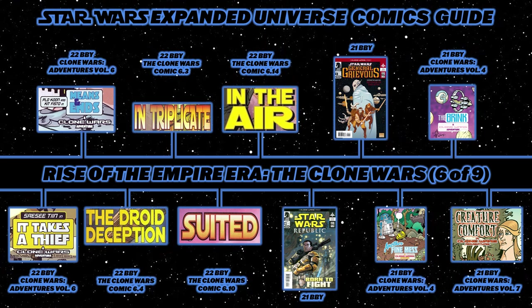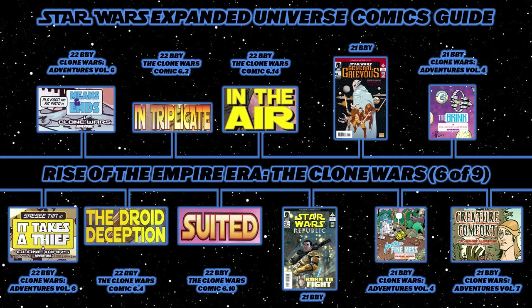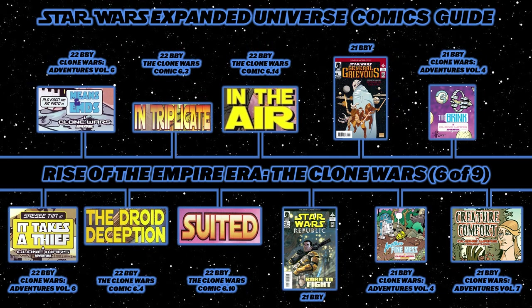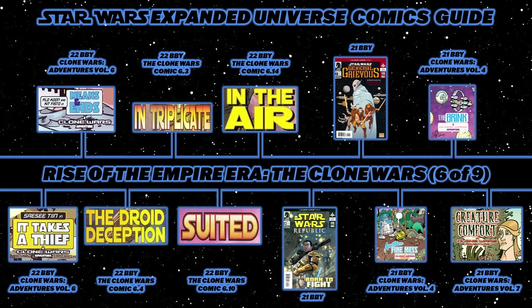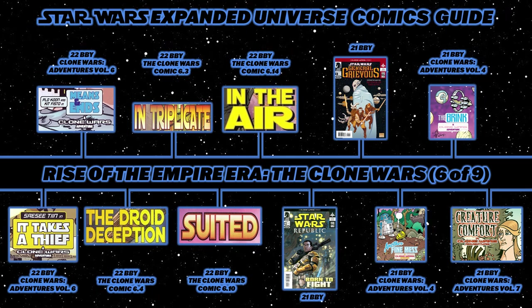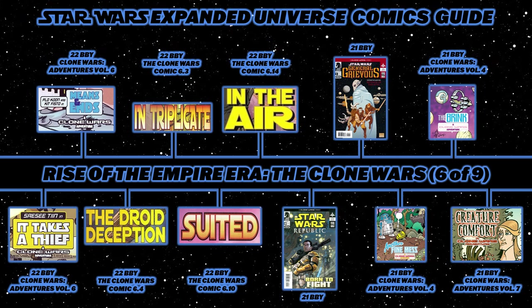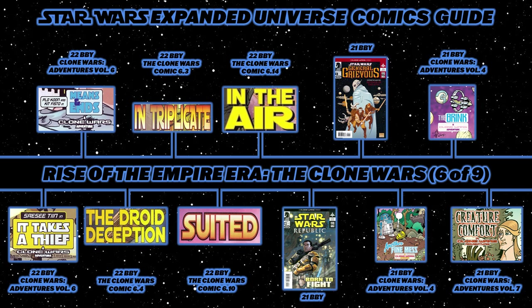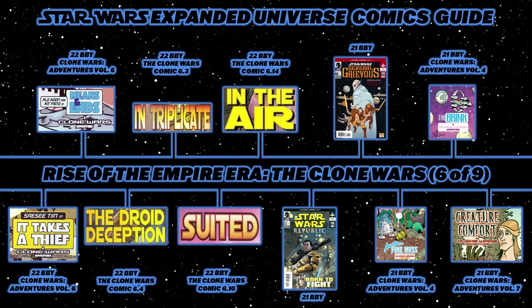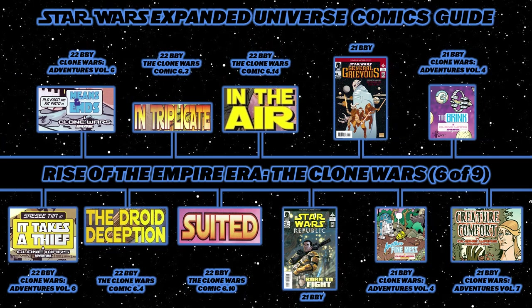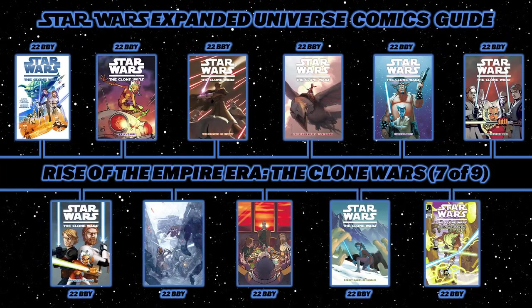Back to Republic issue 68, Armor, told from Commander Bly's point of view as he tries to understand the mysteries of the Jedi. Next, the four-issue miniseries General Grievous, following Padawan Flynn Kybo as he recruits Jedi who've lost friends to General Grievous, setting out to assassinate him. Back to Clone Wars Adventures Volume 4: Another Fine Mess starring C-3PO and R2-D2, then The Brink from Volume 4, and Creature Comfort from Volume 7 starring Anakin.